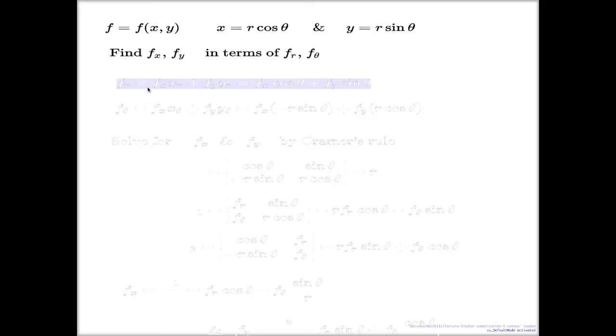So, if I use the chain rule, as before, and I use it in a forward way, so I express my r derivative in terms of x and y derivatives. You see? So,